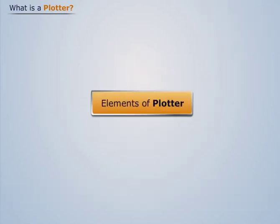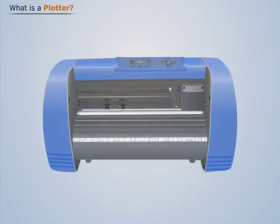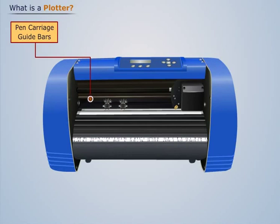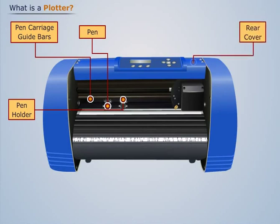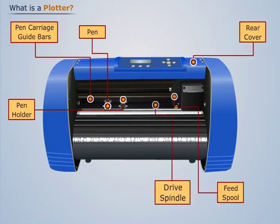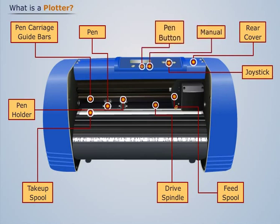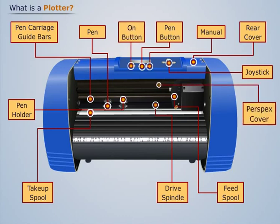Now let us discuss the elements of a plotter. The plotter contains 13 elements, namely: pen carriage guide bars, pen, pen holder, rear cover, feed spool, drive spindle, take up spool, joystick, manual, pen button, on button, perspex cover, and paper knife.